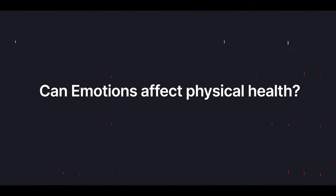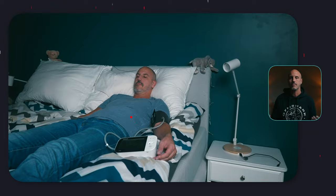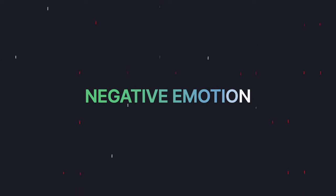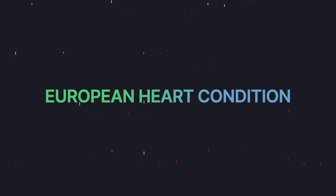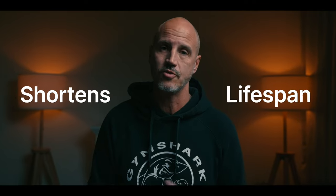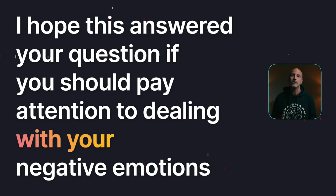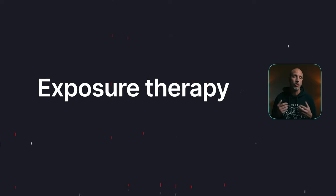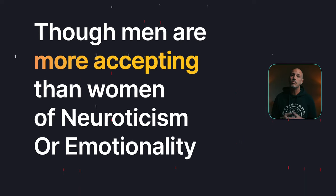Can emotions affect physical health? You can check this yourself by taking your blood pressure when you are angry. Remember that you need to have your blood pressure gauge at the same level as your heart when taking the measurement and you cannot cross your legs or arms. You will find it is higher than normal when under the duress of a negative emotion. High blood pressure takes a toll on your heart and shortens your lifespan. Both men and women are not attracted to people having negative emotions, though men are more accepting than women of neuroticism or emotionality.